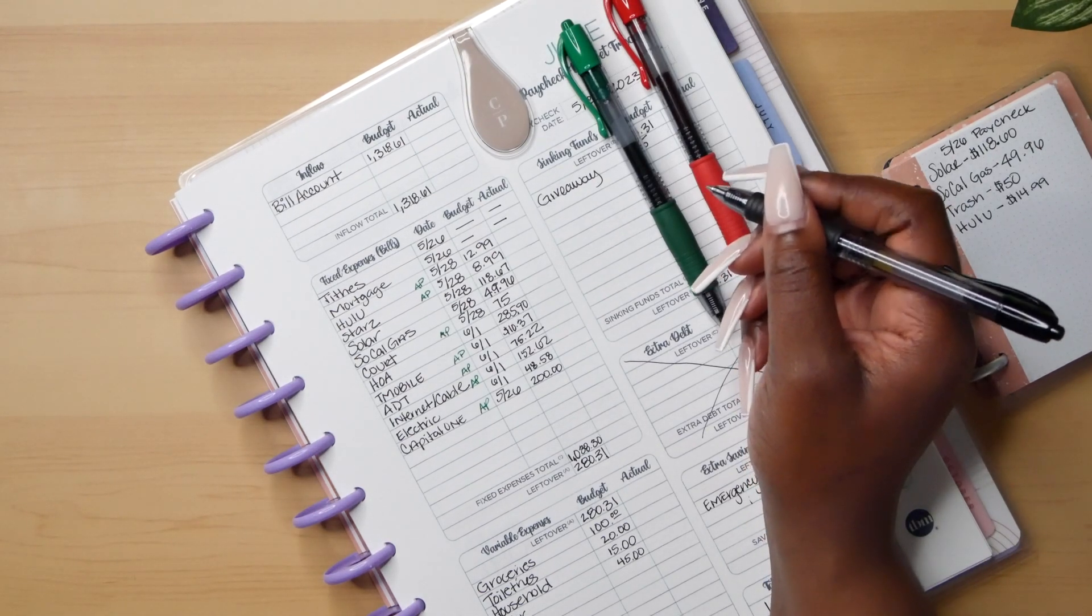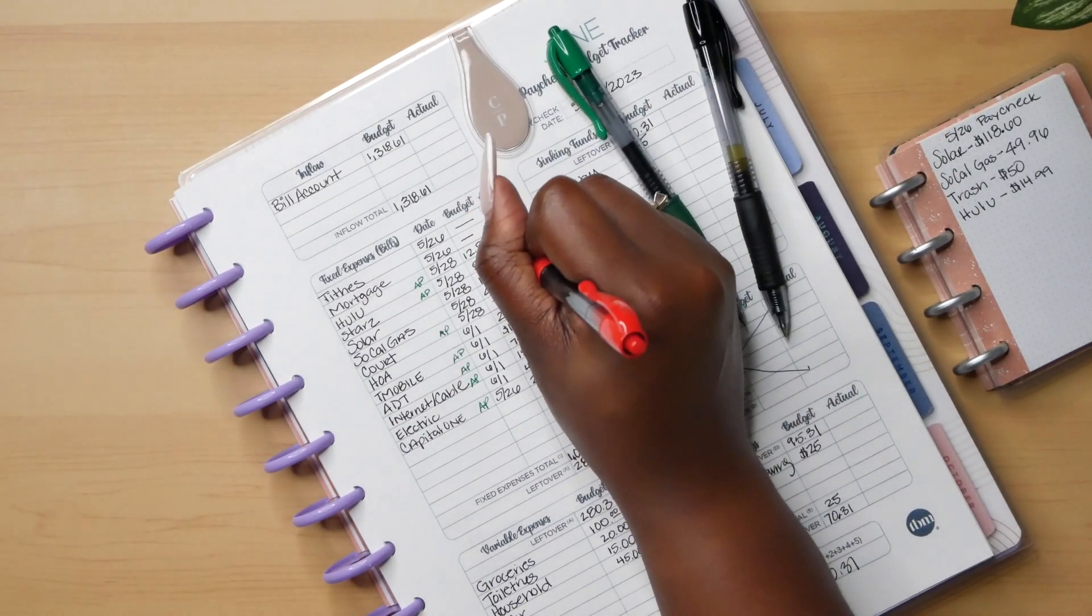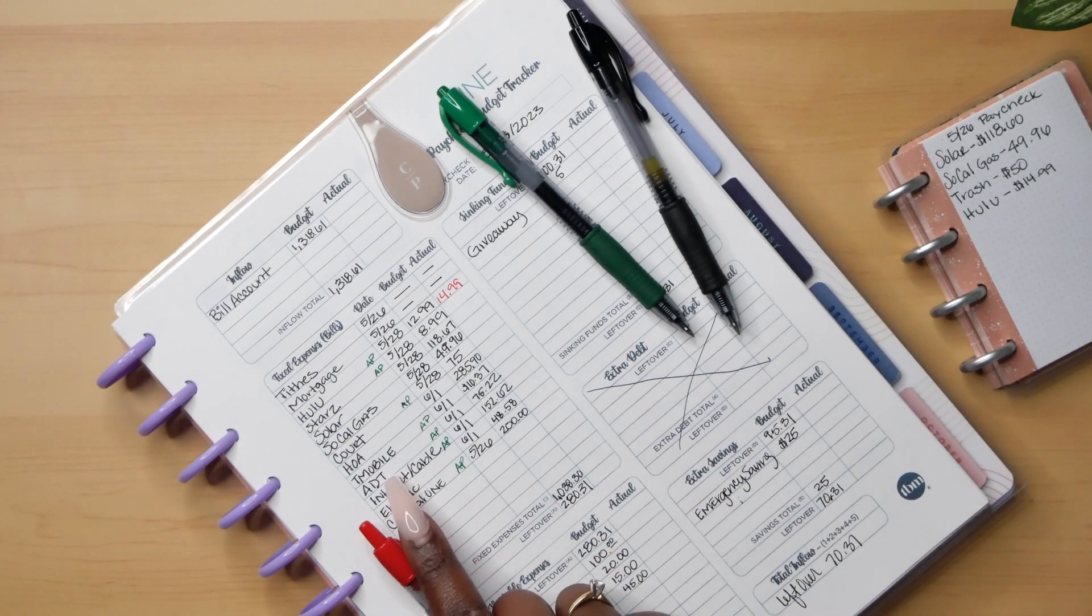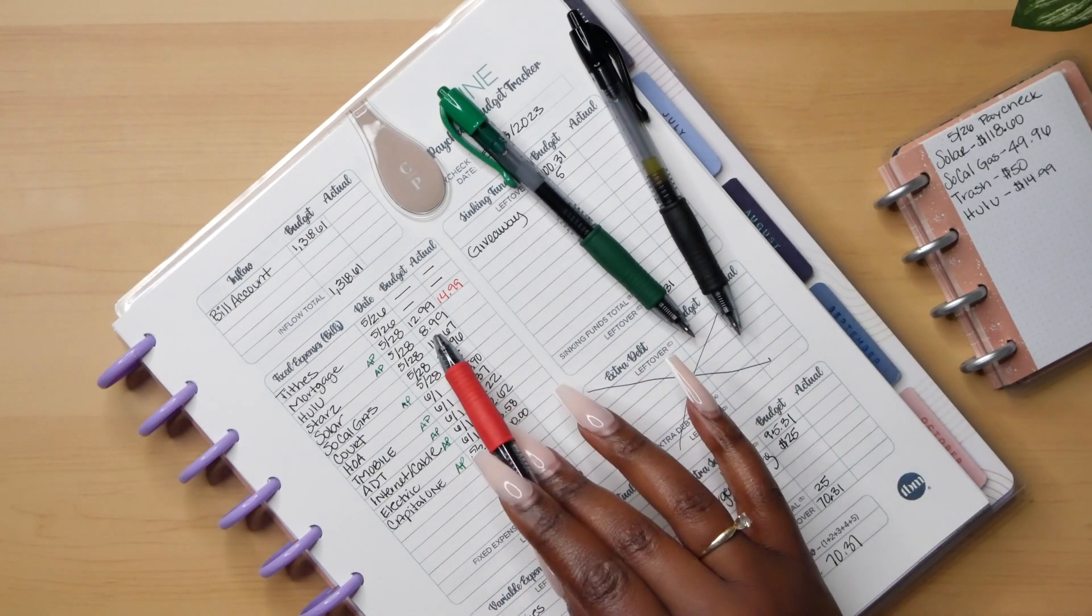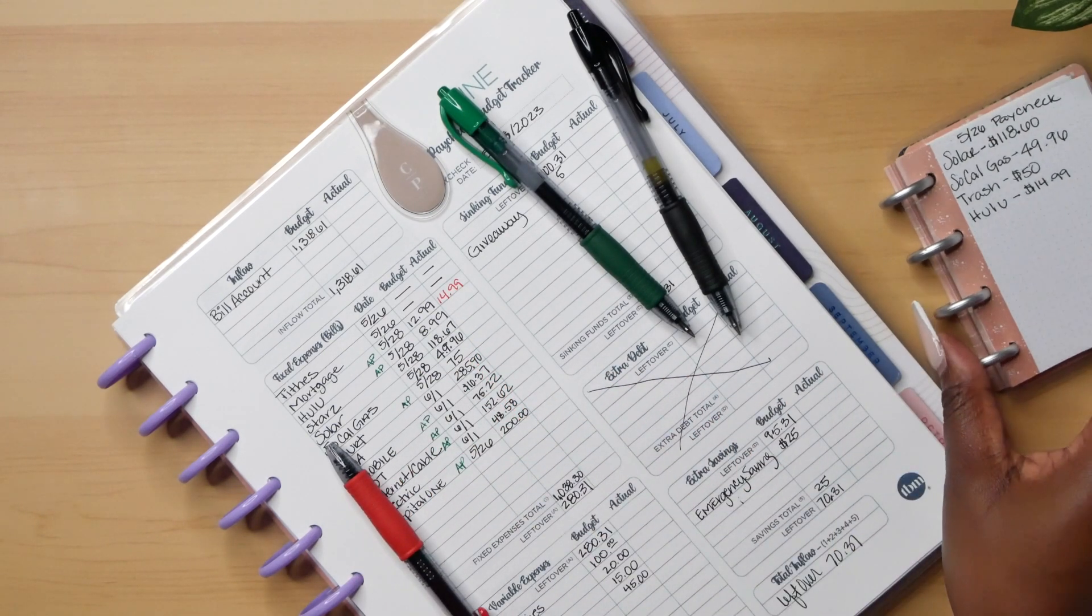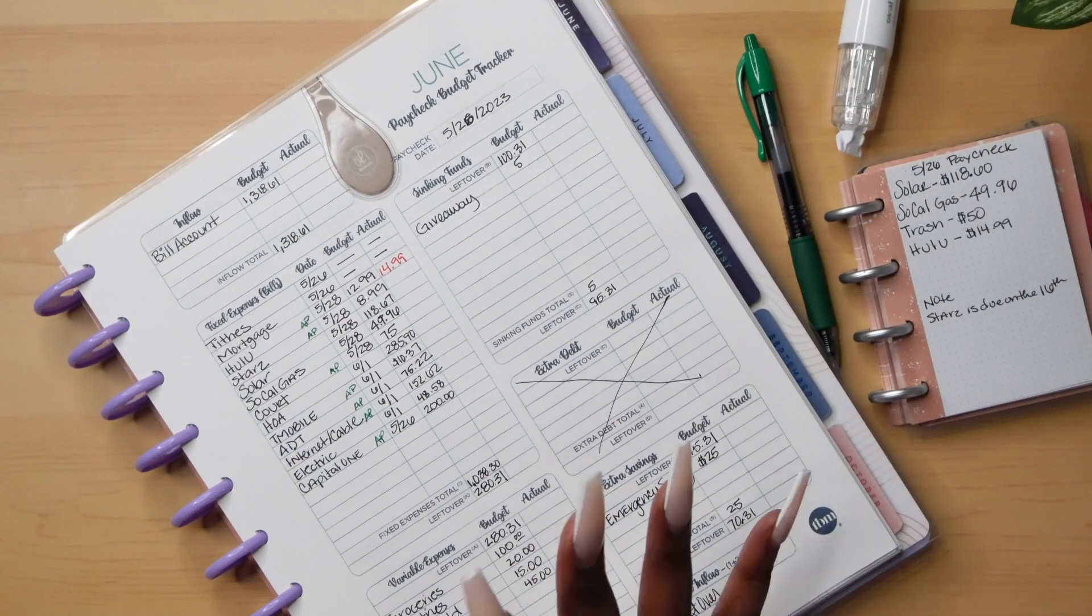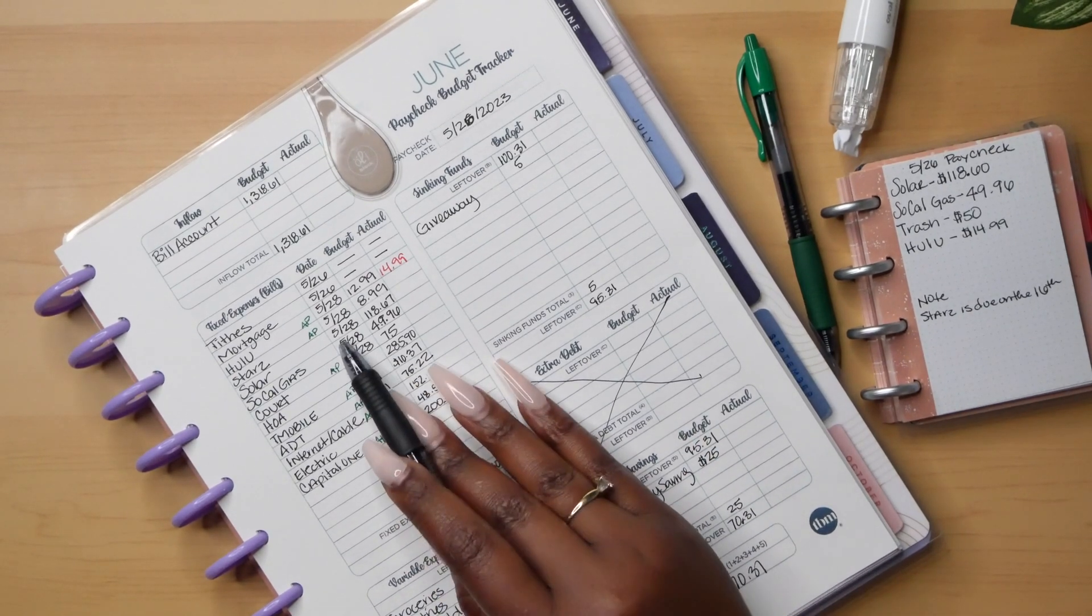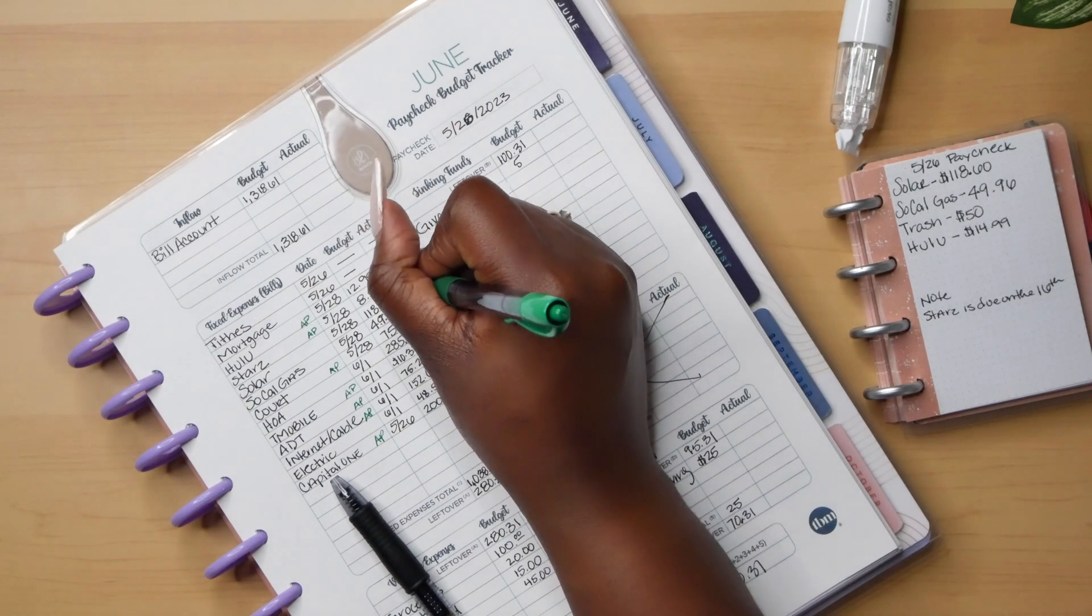Now, Hulu came in at $14.99. So Hulu was actually a little bit more. I didn't know that Hulu, I don't know where I got $12.99 from. And Stars came in at... Stars hasn't come out yet. Even though Stars should have come out. I don't know why I don't have Stars on here. You guys, so off camera, I went ahead and made all of the corrections to the bill tracker and also the calendar that Stars actually comes out on the 16th of the month. I made a note here as well. So it doesn't come out on the 28th. So for here, I'm just going to put zero that we came under at this time.